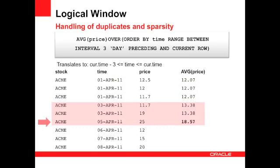When we get to the fifth of April, the range of three days only covers the fifth of April to the third of April, and does not include the first of April, which is as expected. So as you can see in this example, the size of the logical window is actually dynamic. It's changing to match the data set.